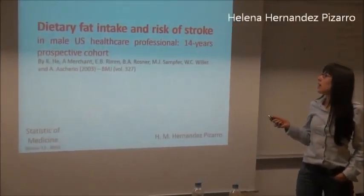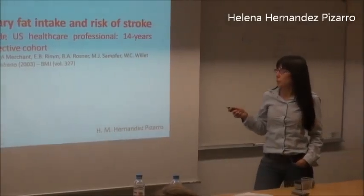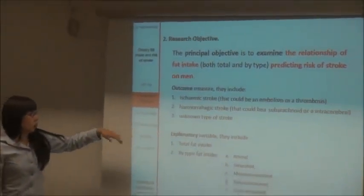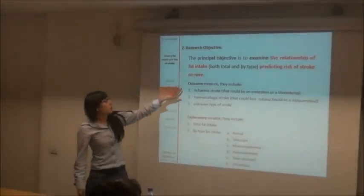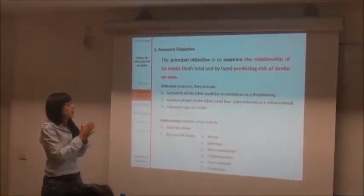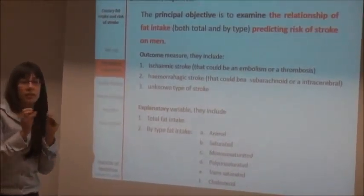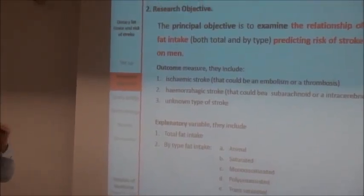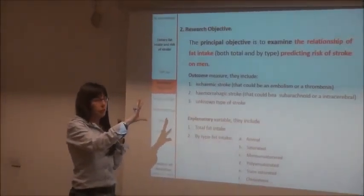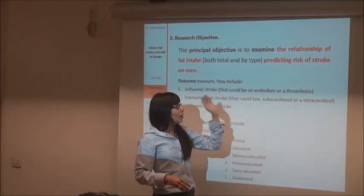Dietary fat intake and risk of stroke. This was published in the British Medical Journal in 2003. They use steroid alcohol. The first type is ischemic stroke — I am going to explain it quickly. In the artery there is a blockage and then the blood does not arrive to part of the body. Embolism, if it is in the brain, and thrombosis in other parts.